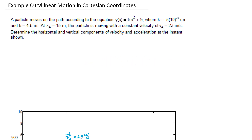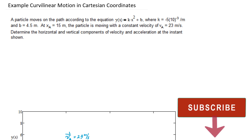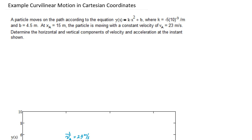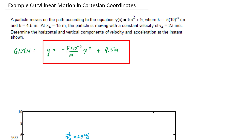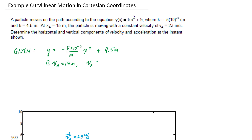In this video we're going to do an example problem dealing with curvilinear motion in Cartesian coordinates. In this problem I've got a particle moving on a path described by y equals kx squared, where k is negative 5 times 10 to the minus 3 per meter, plus b which is 4.5 meters. At x equals 15 meters, the particle is moving with a constant velocity of 23 meters per second.